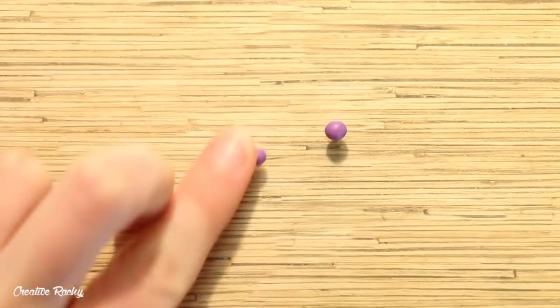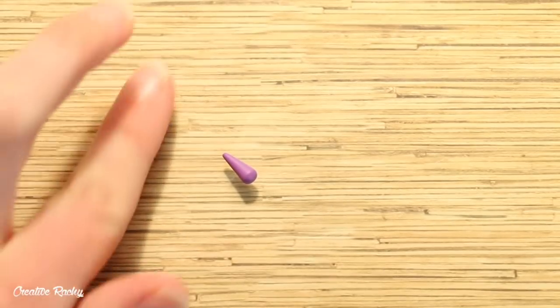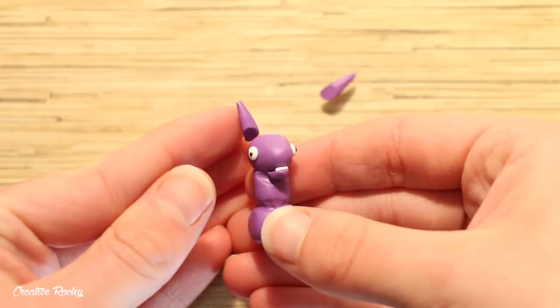To make the ears I took my purple clay again and I rolled two sections into long teardrops. I then cut off the ends on an angle and position them towards the back of the head.